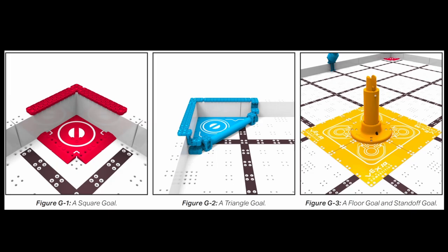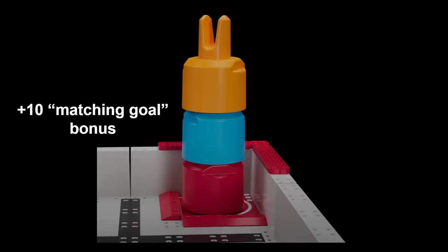There are multiple different goal types on the field. There's the square goal, the triangle goal, the floor goal, and the standoff goal. Luckily, these are fairly straightforward. If you place a stack—remember that's two or more fully nested game objects—into a goal and the bottom pin's color matches the goal, you get a 10-point matching goal bonus. Here's an example where the bottom pin's color matches the square goal's color. So this stack qualifies for the 10-point matching goal bonus.